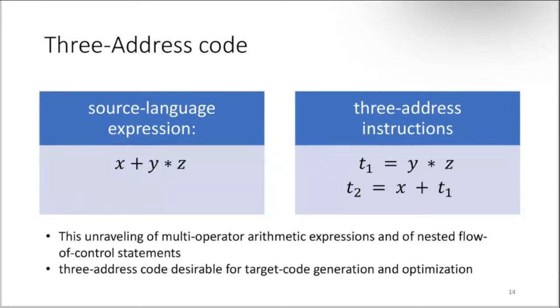The next representation is three-address code. For example, you have a source language expression like x plus y multiplication z. In three-address instruction, we split this into smaller parts. One operation per instruction is what happens in three-address code.